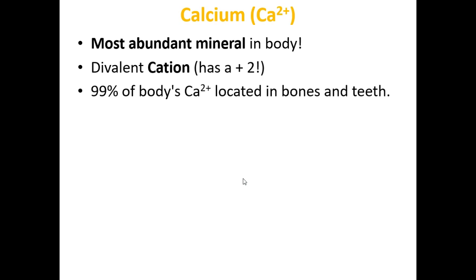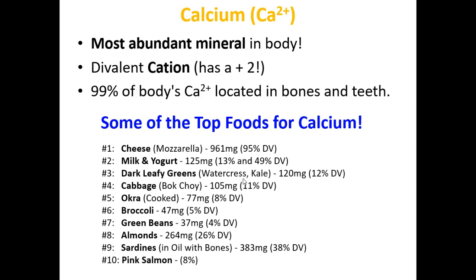Calcium is the most abundant mineral in the body and is a divalent cation — CA²⁺ — with a valence of two. 99% of the body's calcium is located in bones and teeth. Absorption depends on body pool size. Food sources include dairy products and milk.